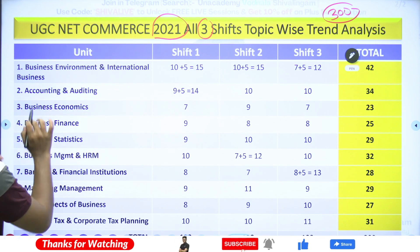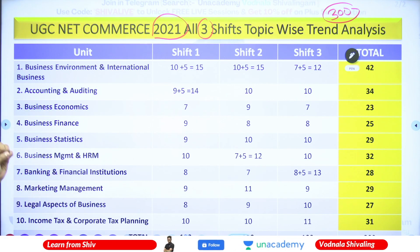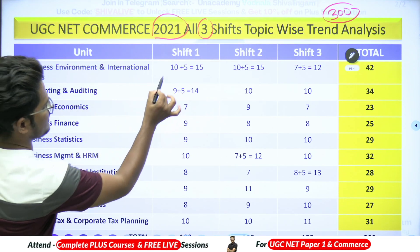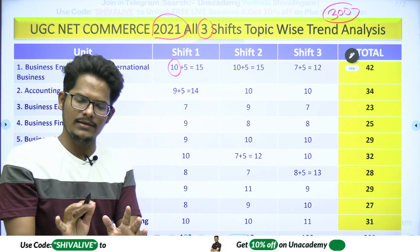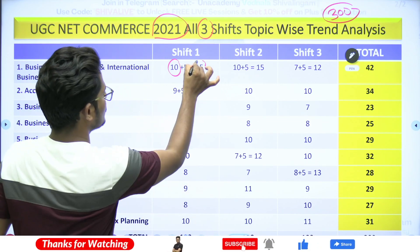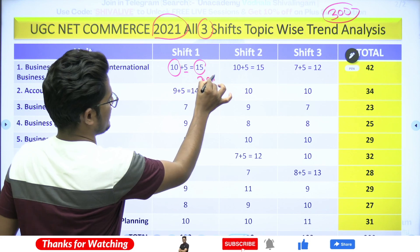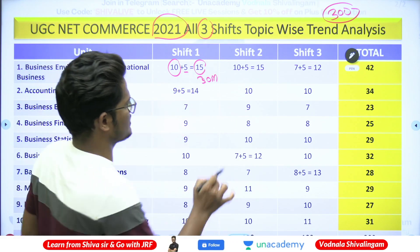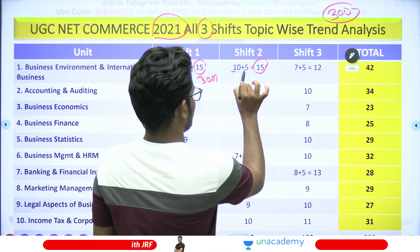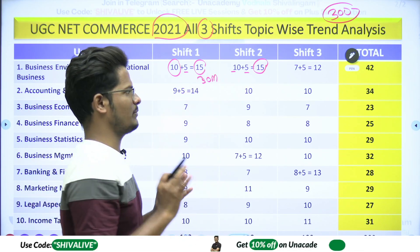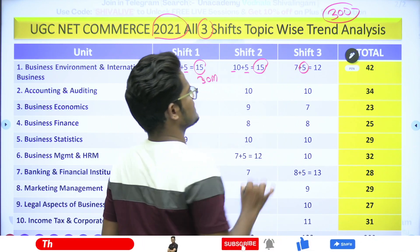In Shift 1, Business Environment and International Business (B&IB) had 10 individual questions plus 5 Reading Comprehension questions — total 15 questions, covering 30 marks from Unit 1 alone. In Shift 2, the same pattern: 10 questions and 5 Reading Comprehension from B&IB. In Shift 3, again one RC from B&IB with 7 individual questions.